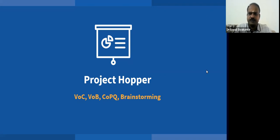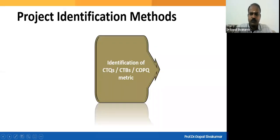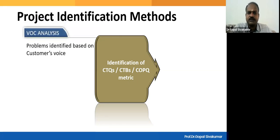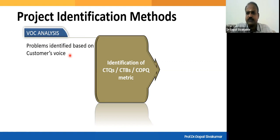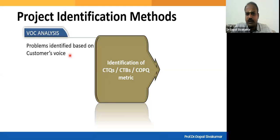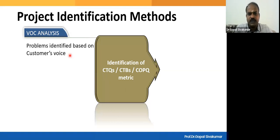So we have done the Voice of Customer analysis — that means problems are identified based on the customer's voice, both internal customers and external customers. External customers are the end users; internal customers are the employees or process owners employed in your organization. If there is a pain identified in their feedback, those are also improvement opportunities.